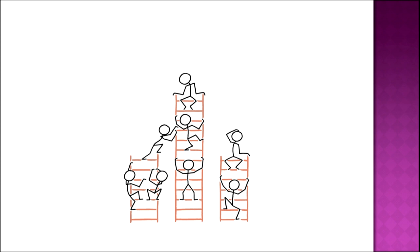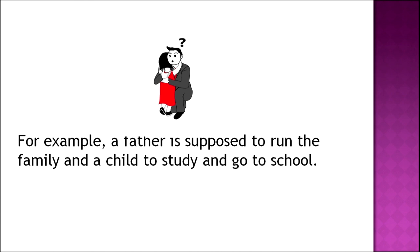As we are moving from one stage to another stage, people learn certain behavior patterns and certain skills more easily and successfully at certain stages, and this becomes the social expectation. For example, a father is supposed to run the family and a child is supposed to study and go to school. Such social expectations of a particular age, common to all persons, are known as developmental tasks. Havighurst was the first developmental psychologist to identify the developmental tasks of different age groups.